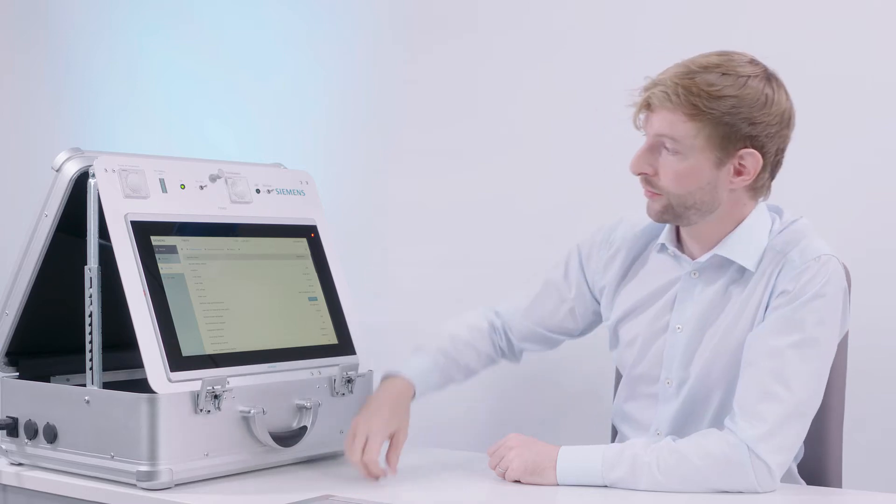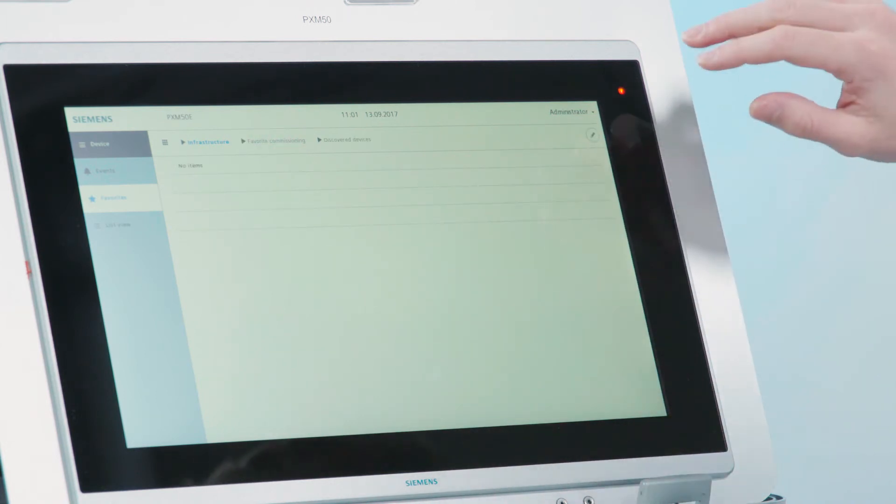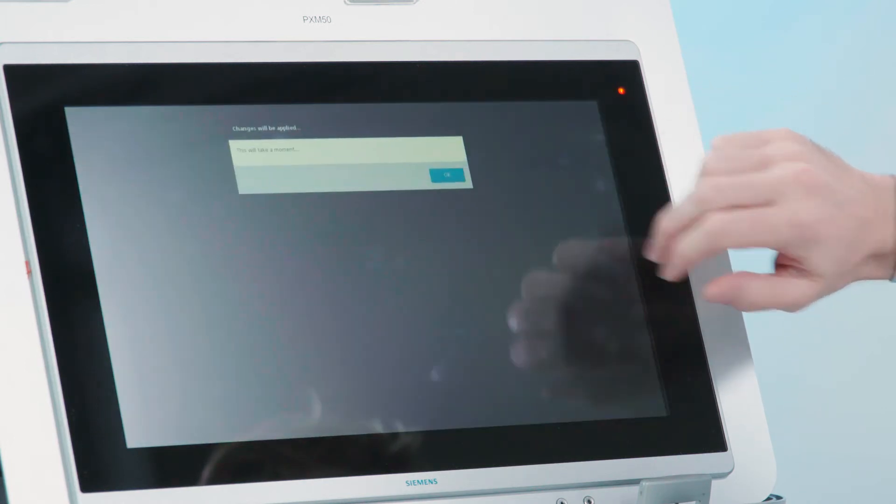Once all the local settings have been made, you can define those devices in the automation network which should be operated by the Segal Control Point. Navigate back to favorite commissioning, go to discovered devices, hit the small pencil icon in the top right corner, hit discover and OK. And then the list should populate with the devices which are found in the network.